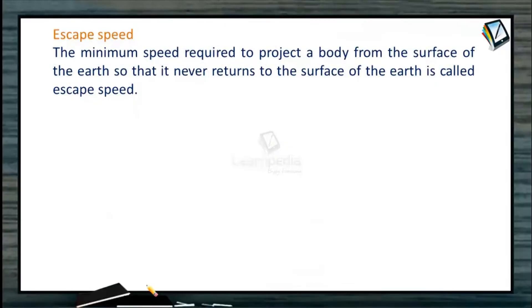Now let us discuss the concept of escape speed. It is defined as the minimum speed required to project a body from the surface of earth so that it never returns back again to the surface of earth. Or we can say that it is the minimum velocity necessary to impart to a body such that it can completely escape the gravitational pull of bodies. Suppose if this is the earth of mass M and we are going to project this body of mass small m, then this body should be given at least this much speed such that it can go out of the gravitational pull of the earth.